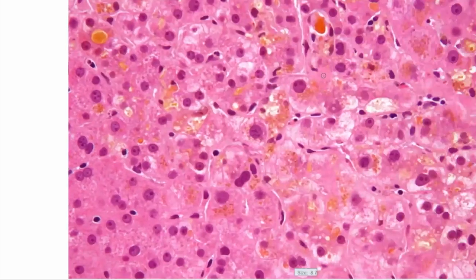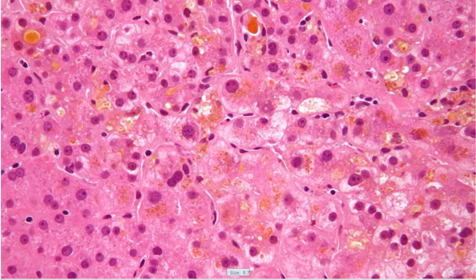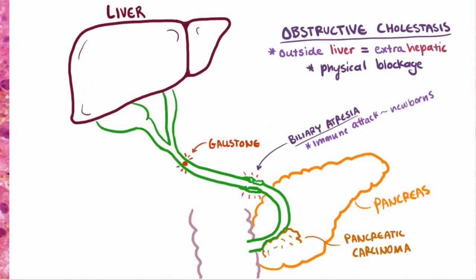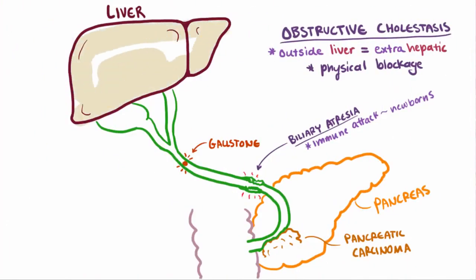This buildup of bile will be pretty obvious on histology of the liver, and will look like these bile lakes, or bile infarcts, which are pools of yellowish-green bile that have made their way into the interstitial space and sort of pooled up there. If we look at the gross image of the liver, all this bile will cause it to take on a yellowish-green color.